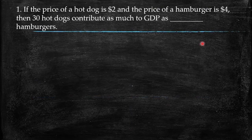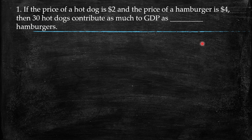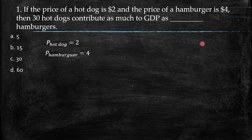First question: if the price of a hot dog is two dollars and the price of a hamburger is four dollars, then 30 hot dogs contribute as much to GDP as how many hamburgers? Keep in mind the price of the hot dog is two dollars, the price of a hamburger is four dollars, and the quantity of hot dogs is 30.